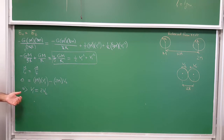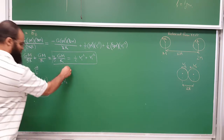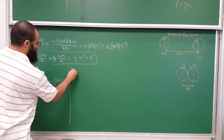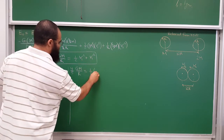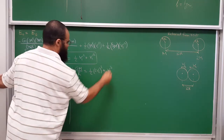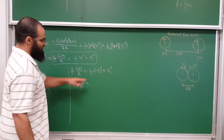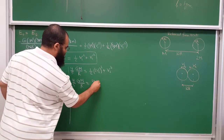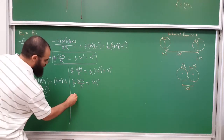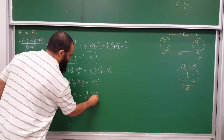Substituting V1 = 2V2 into the energy equation: (4/5)·GM/R = ½·(2V2)²+ V2² = ½·4V2² + V2² = 2V2² + V2² = 3V2². Dividing both sides by 3: V2² = (4/15)·GM/R, so V2 = √(4/15 · GM/R).